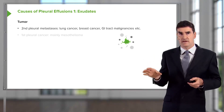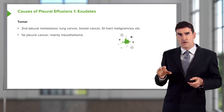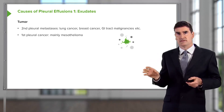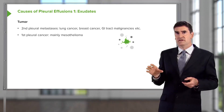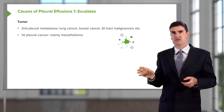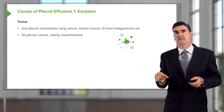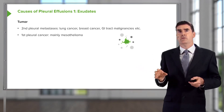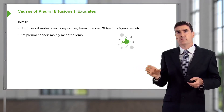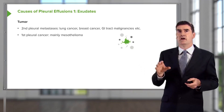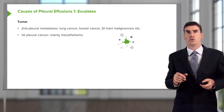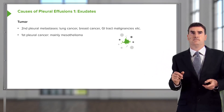There are primary pleural cancers as well. These are very rare in general, apart from mesothelioma, which is a primary cancer of the pleura associated with asbestos exposure, which I've discussed in the lung oncology lecture.